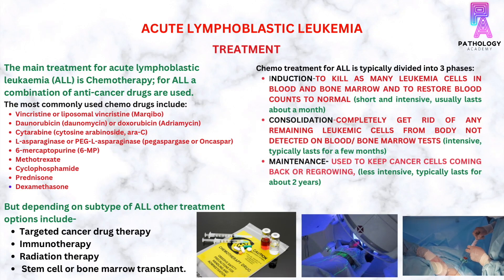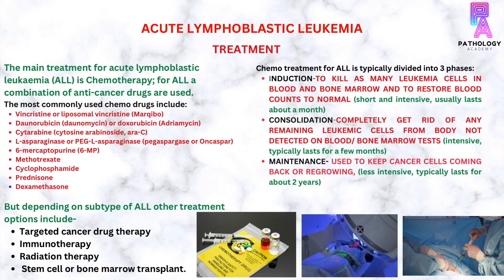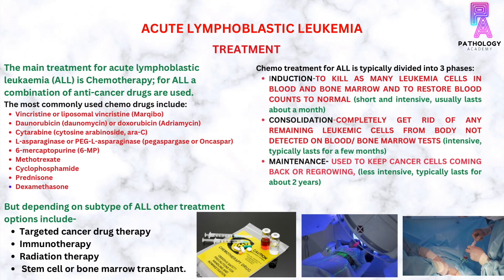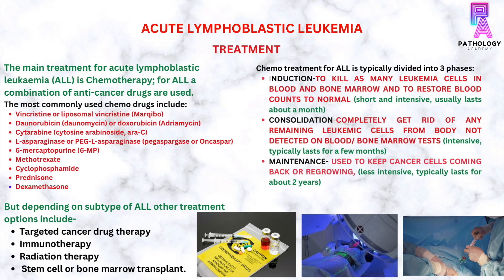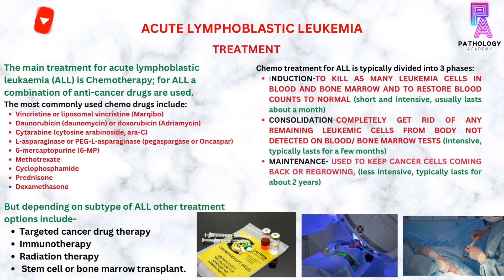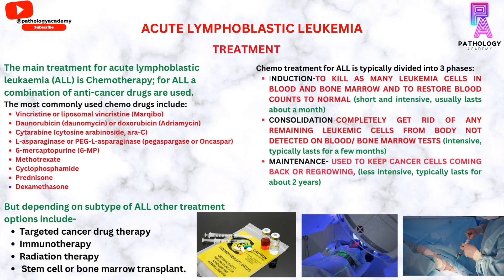Treatment of acute lymphoblastic leukemia: the main treatment for ALL is chemotherapy. A combination of anti-cancer drugs are used. The most commonly used chemo drugs include vincristine, daunorubicin, cytarabine, L-asparaginase, 6-mercaptopurine, methotrexate, cyclophosphamide, prednisone, and dexamethasone. This chemotherapy treatment in ALL is typically divided into three phases: induction, consolidation, and maintenance.